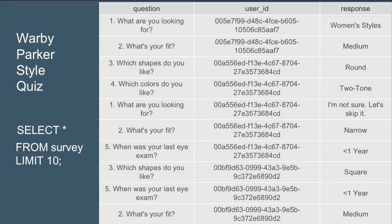So we started off here with a query trying to get a feel for the table, particularly the survey table, and we wanted to see what questions are being asked in the style quiz. So we did a select star from survey limit 10 and we found some of the questions are what are you looking for, what's your fit, which shapes do you like, which colors do you like, and when was your last eye exam, and we also got an idea for some of the user IDs and some of the responses like women's styles.